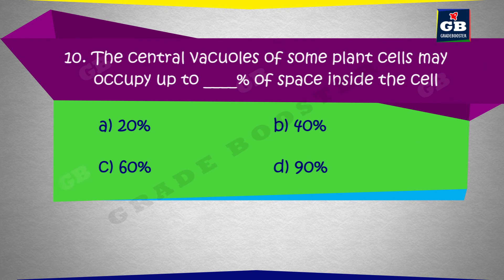The central vacuoles of some plant cells may occupy up to what percent of space inside the cell? a) 20 percent, b) 40 percent, c) 60 percent, d) 90 percent.